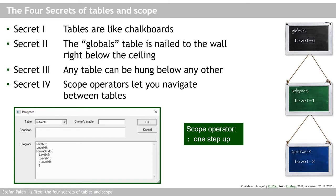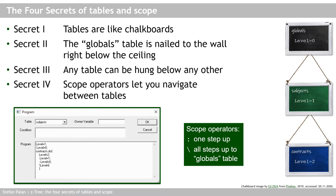Since the globals table is usually at least the second most important table after the subjects table, Ctree offers a second scope operator: the backslash. The backslash is your shortcut to the globals table, since it will always take you all the way to the top chalkboard — the one that is nailed solidly to your wall. So using this backslash scope operator, I can in one step directly modify the instance of my level variable that is saved in the globals table.